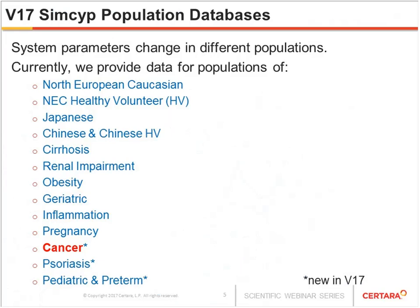I'm going to give you a brief overview of the new SimCancer population, which is in version 17 of the SimSip Simulator. In the simulator we have 19 populations available to us, and the reason we do this is to look at predictions of exposure in different populations. We know there are differences, for example in ethnicities, which result from differences in demographics and physiological changes between populations.